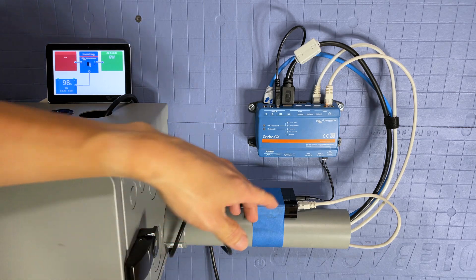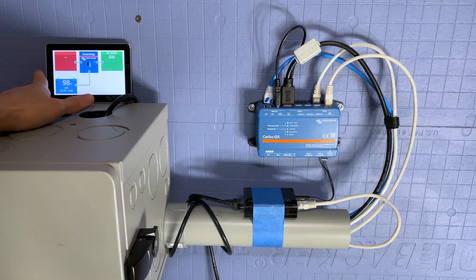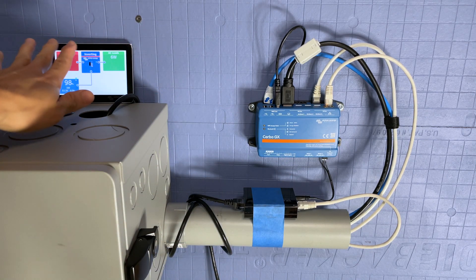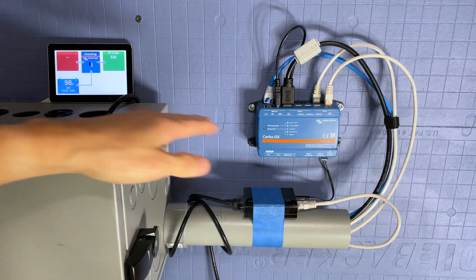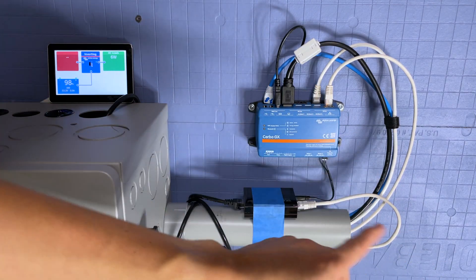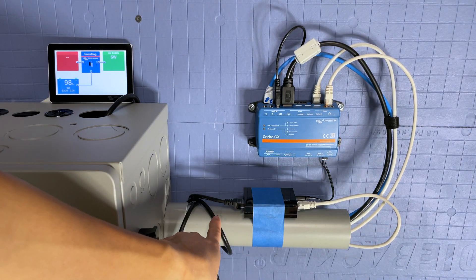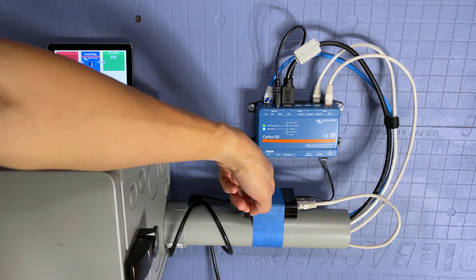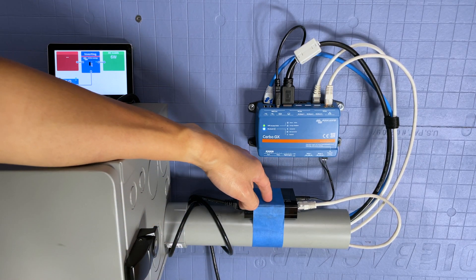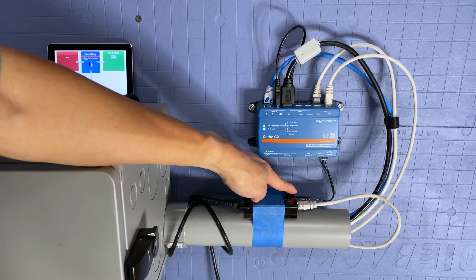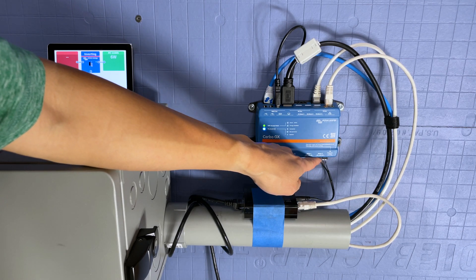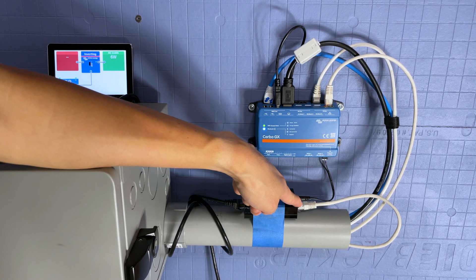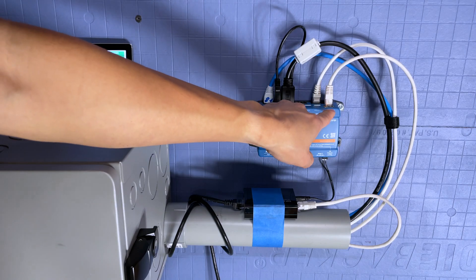All right, so as you can see right here, this is the Cerbo GX. This is the GX Touch 50. It works. And currently, this Cerbo GX is being powered by this black Ethernet cable which plugs into this PoE device which then takes the DC power out of here, plugs it into this power connector, and takes the Ethernet out and connects it to here.